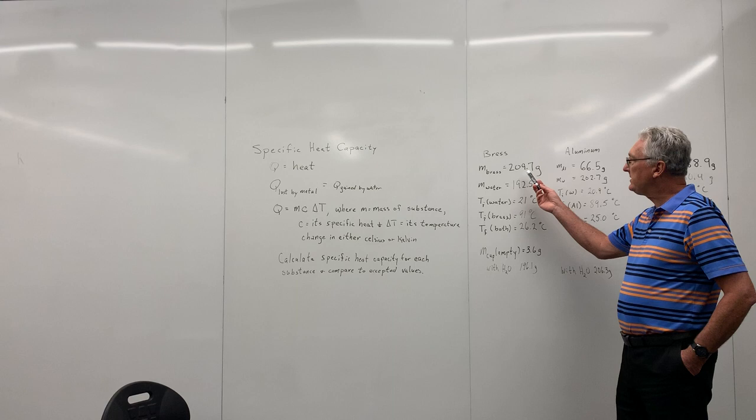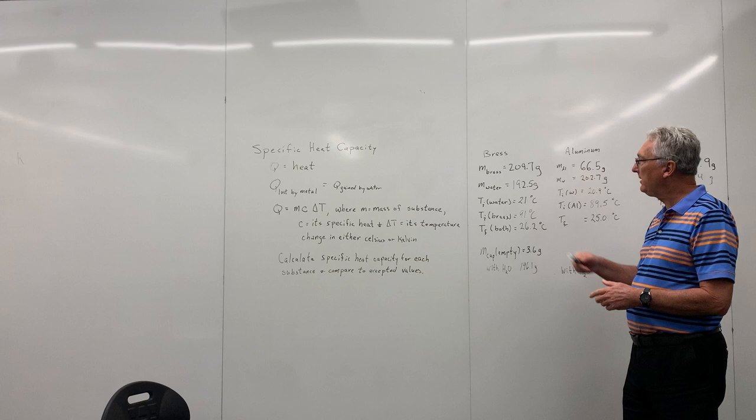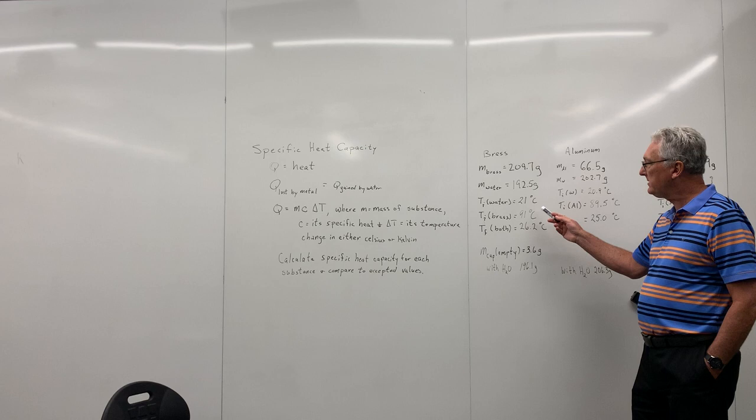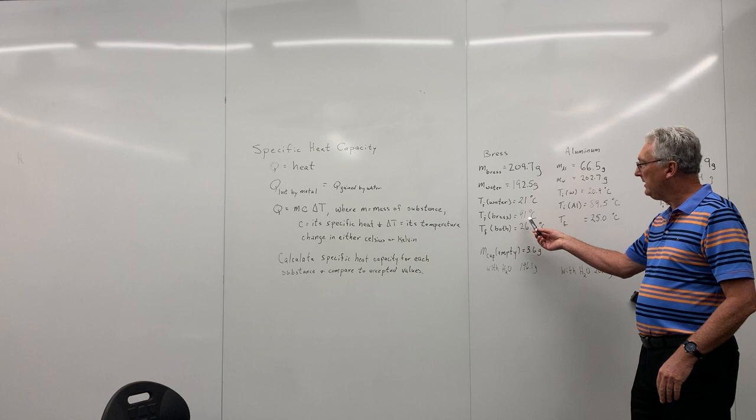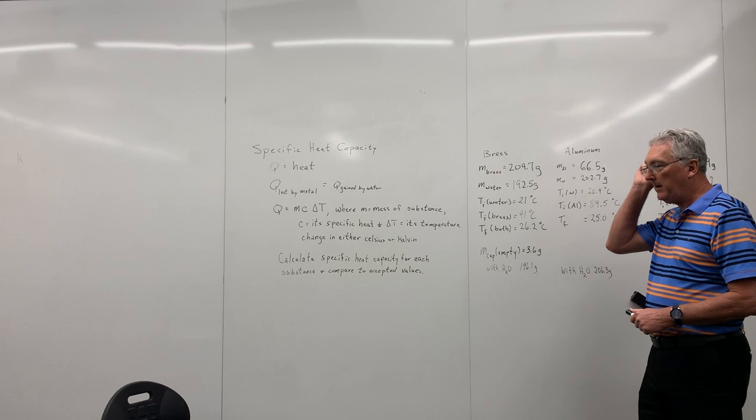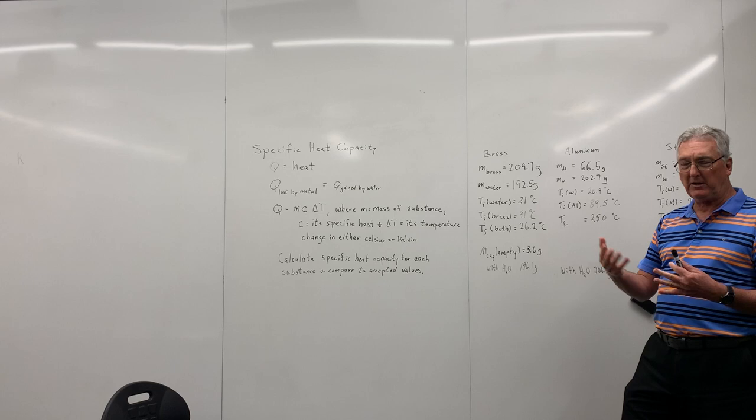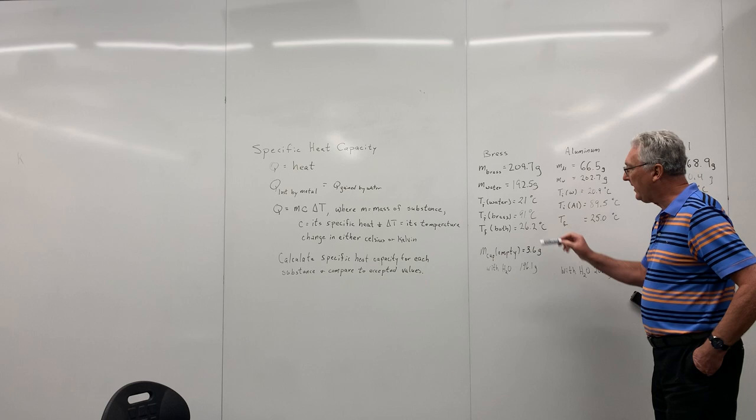We had a mass of 209.7 grams. The water in the styrofoam cup for that particular one was 192.5 grams. The initial temperature of the water was 21 degrees Celsius. The initial temperature of the brass, we put it in water that was almost boiling. So it's 91 degrees Celsius. Once we put the brass into the styrofoam cup, the water in the cup went up to 26.2 degrees. So they should have reached equilibrium. The brass and the water would both be 26.2 degrees for this final temperature.